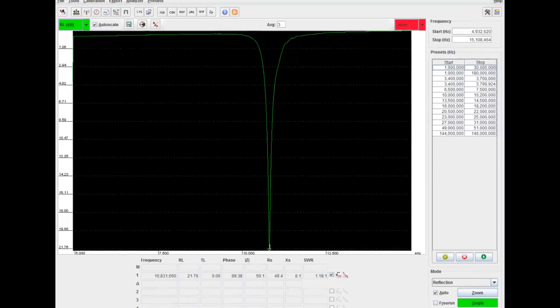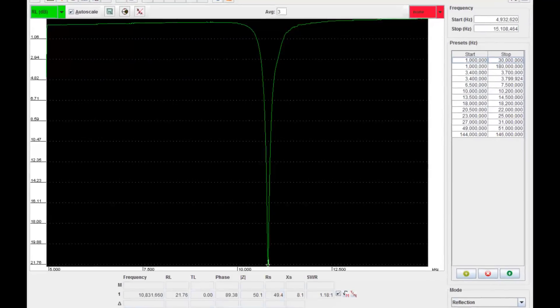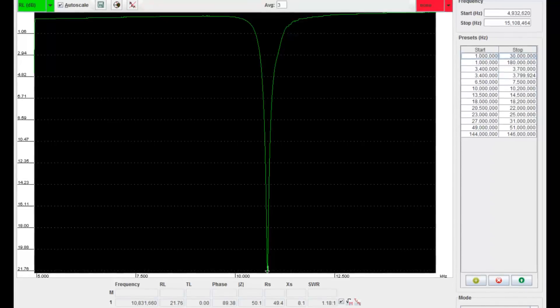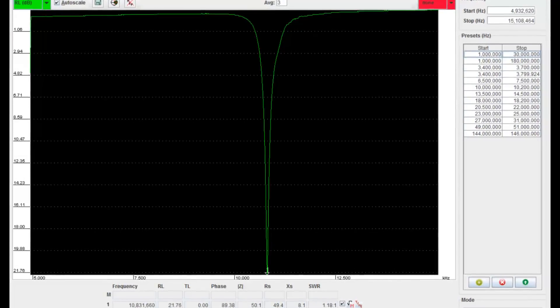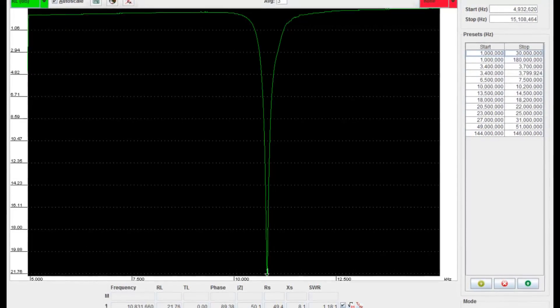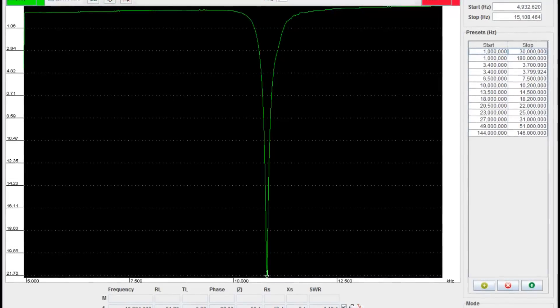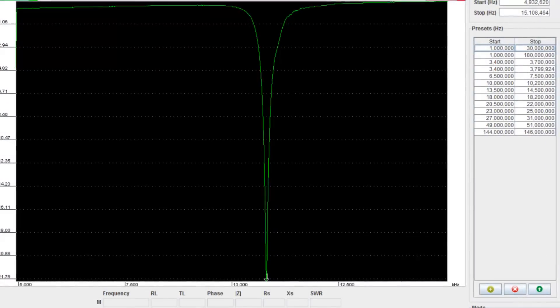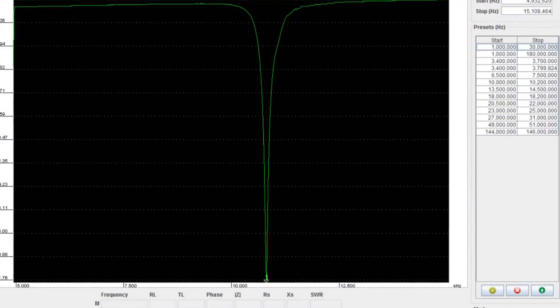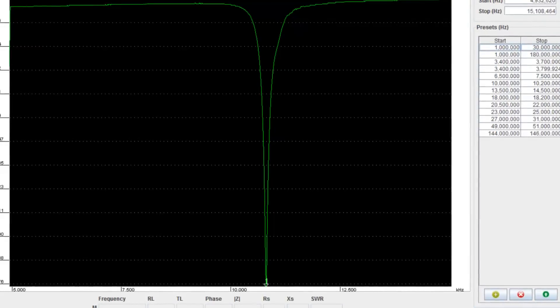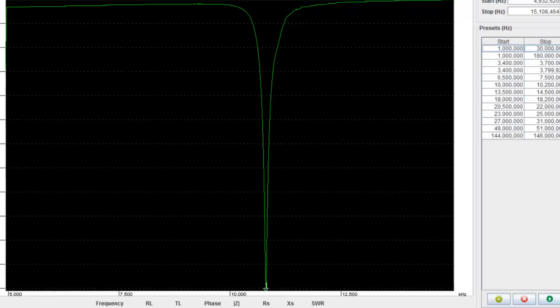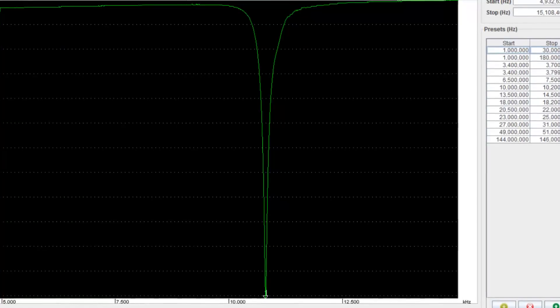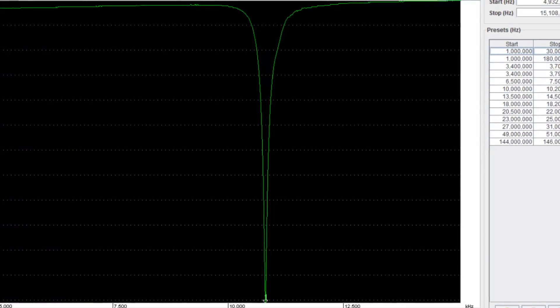This trace shows the response curve of the FM transformer. The frequency range across the bottom is 5 MHz to 15 MHz and you can see the dramatic dip at 10.8 MHz. The IF transformer should be tuned to 10.7 MHz, although in fairness I didn't calibrate the analyzer before I took these readings. All I wanted to do was show you the general profile of the response curve for an IF transformer.